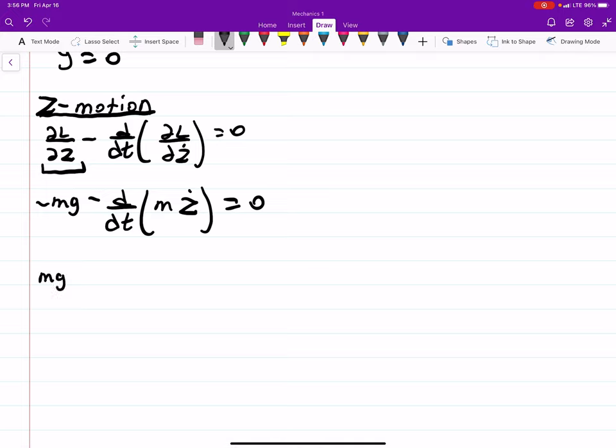So we're going to get Mg equals minus MZ double dot. And if we wanted to solve for the acceleration, obviously the mass goes away. And we see the acceleration is minus G in the Z-direction.